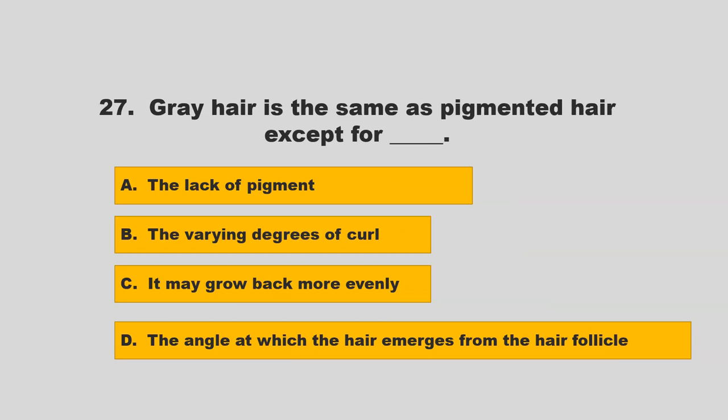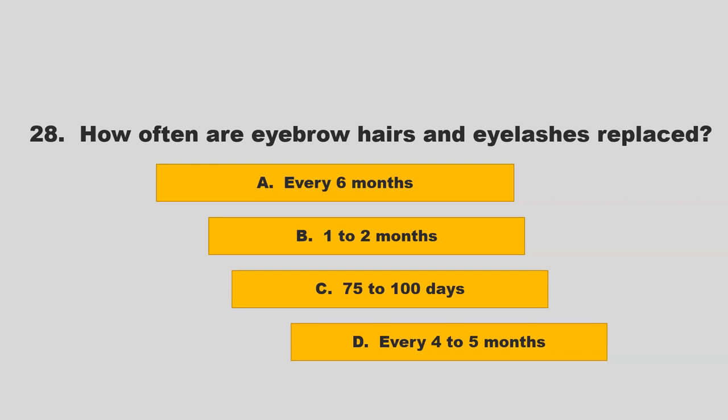Gray hair is the same as pigmented hair, except for blank. Is it the lack of pigment, the varying degrees of curl, it may grow back more evenly, or the angle at which the hair emerges from the hair follicle? If you chose A, the lack of pigment, you are correct.